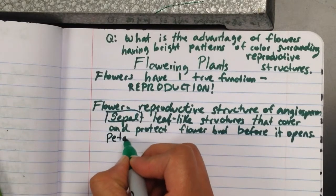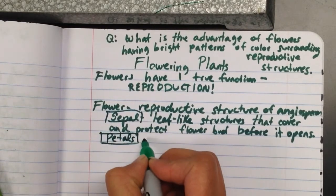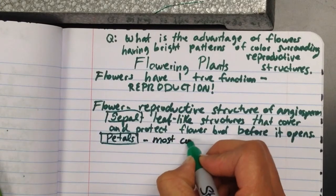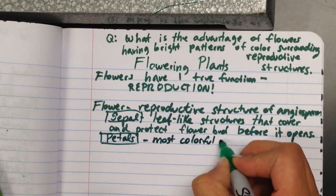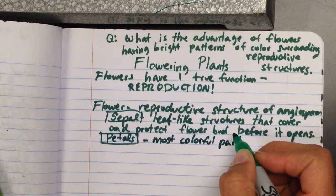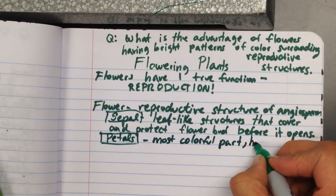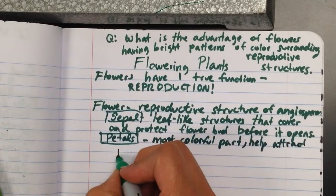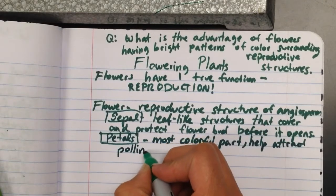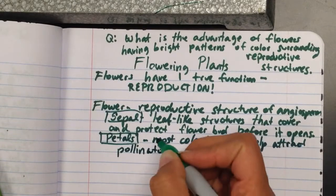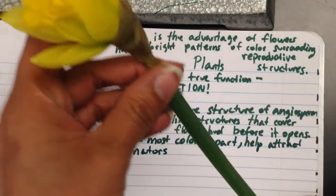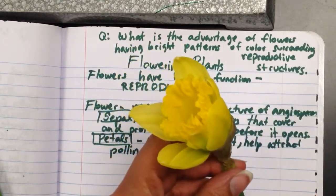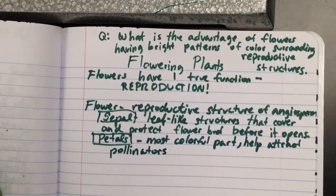Then we have the petals, which you should all be familiar with. And the petals are the most colorful part of the flower. And they help attract pollinators. So these pretty colors and the pretty smell are not just for us to enjoy, but they actually attract bees and other pollinators.